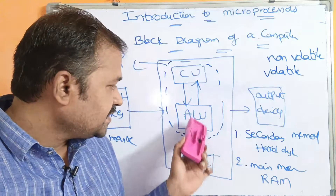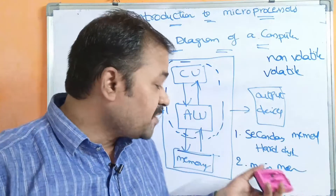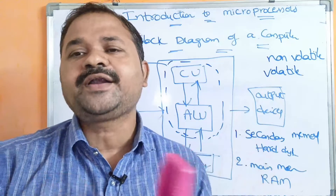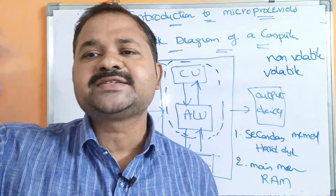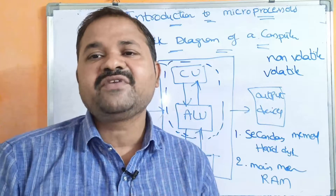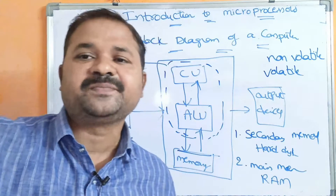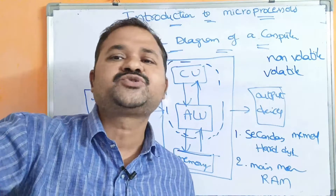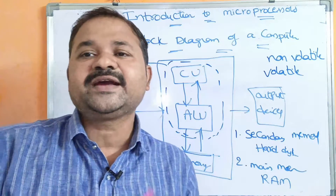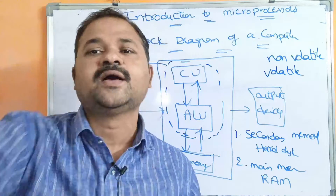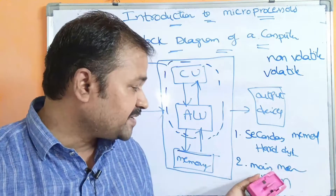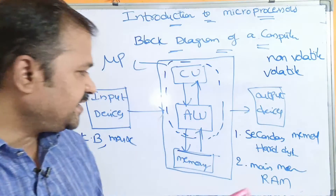The problem is CPU can execute a program only if the program resides in main memory. If the program resides in hard disk, the CPU cannot execute that program. CPU cannot access secondary memory — CPU can access only main memory. So whenever we open any movie, that movie information will be automatically transferred from hard disk to RAM. CPU can execute a program only if the program resides in main memory.